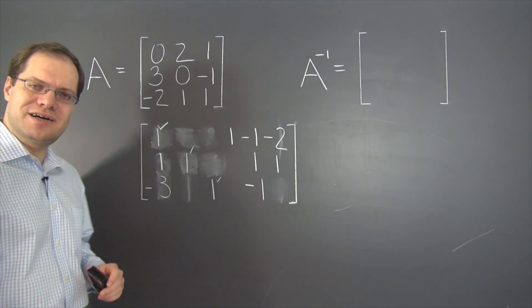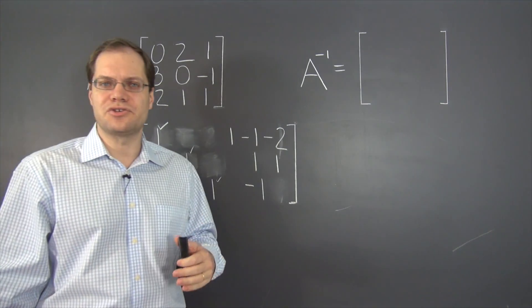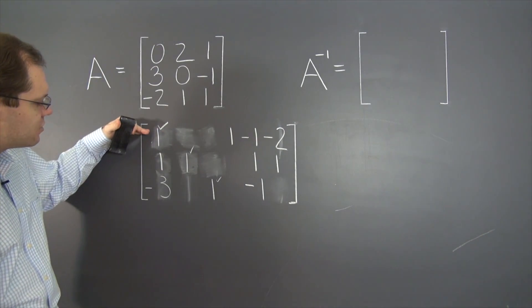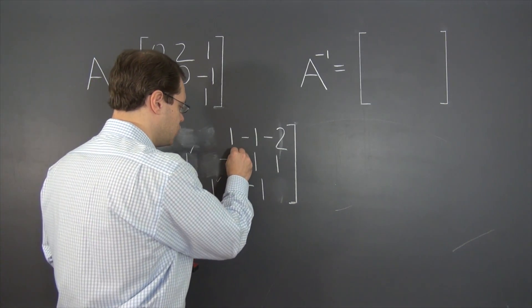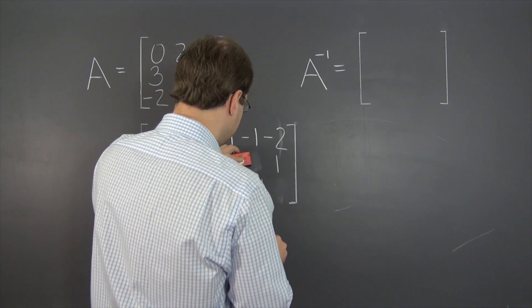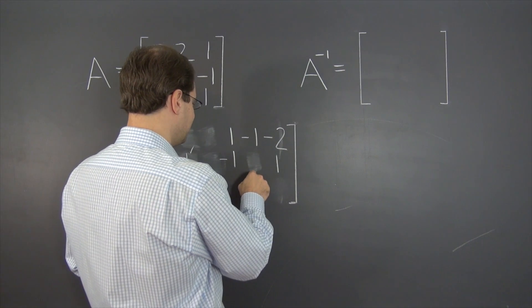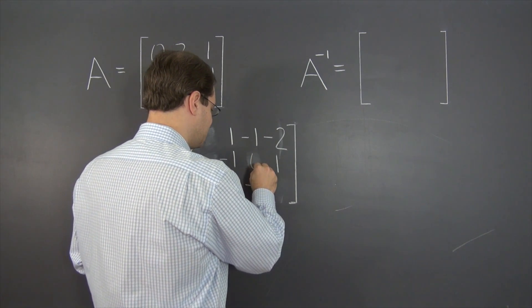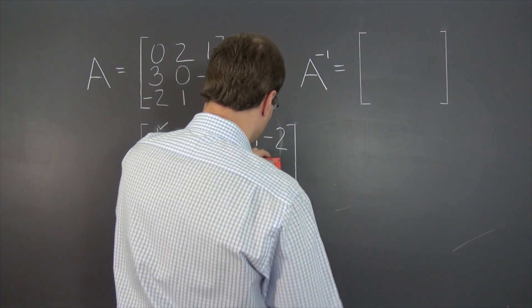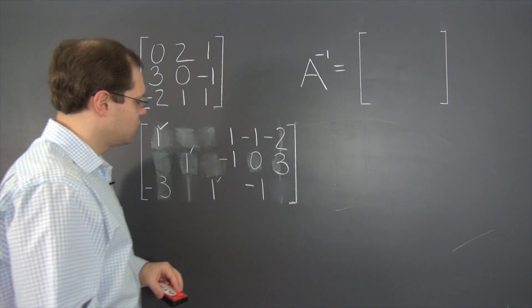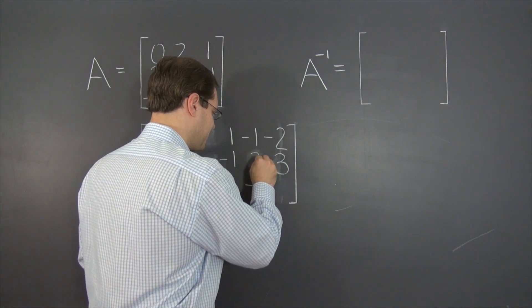We already have a one, a little bit lucky, but that's how I designed this example. So the rest is straightforward. It is to subtract row one from row two. Subtract row one from row two. If this had been a one, then this is now a two.